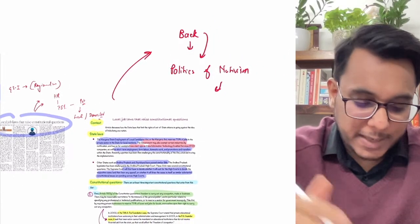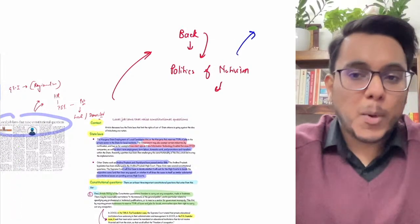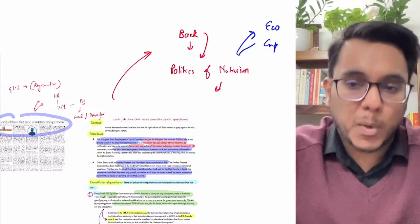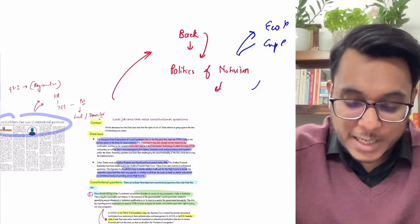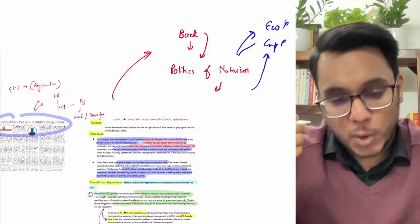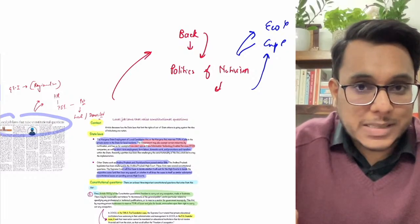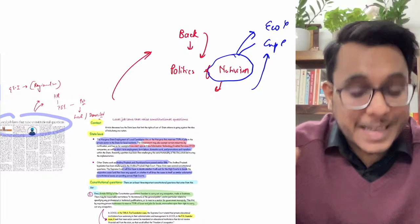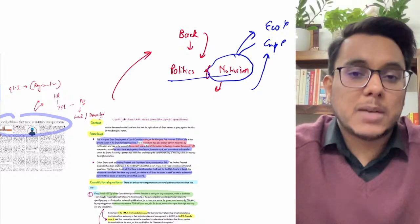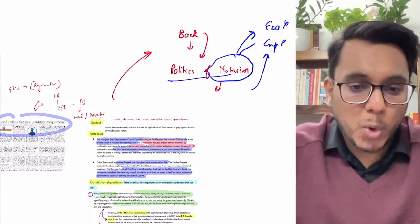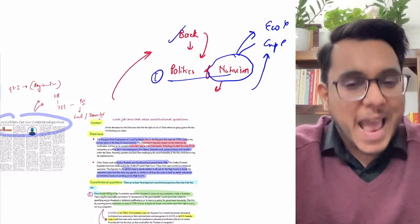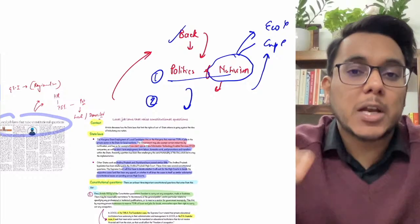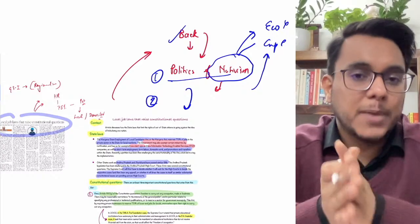Politics of nativism: political parties unable to solve unemployment and economic problems tell people that outside people came and took their resources, promoting an 'us versus them' narrative. This emboldens nativist politics. As part of this, laws come reserving jobs only for local/native people.